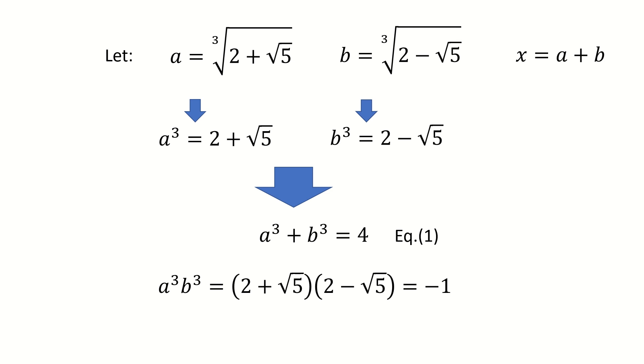Next, we multiply them together. And then we got a cube multiply b cube equals negative 1. And then we take the cubic root on both sides. So we got ab equals negative 1. This is equation 2.